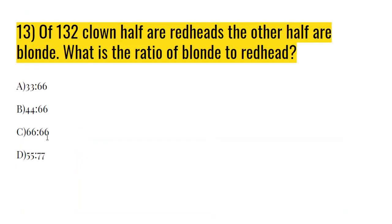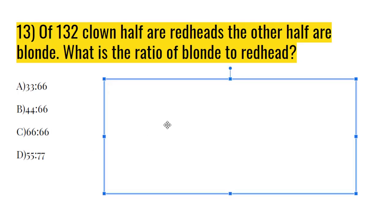Of 132 clowns, half are redheads and the other half are blonde. What is the ratio of blonde to redhead? 33 and 36, if you add them, you do not get 132. 44 and 66, if you add them, you do not get 132. 66 plus 66, you will get 132. And 55 and 77, you will get 132. So we crossed off A and B already.